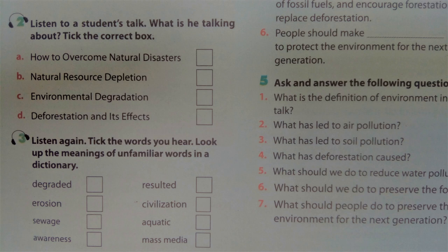For instance, we should control the burning of fossil fuels and encourage forestation to replace deforestation. In addition, there should be appropriate places to dump harmful rubbish and chemicals to reduce the rate of water pollution, a threat to human health and a danger to aquatic animals. To minimise the rate of environmental degradation and to raise awareness of its threats, the preservation of the environment should be included in education and mass media. People should make every effort to preserve the environment for the next generation.